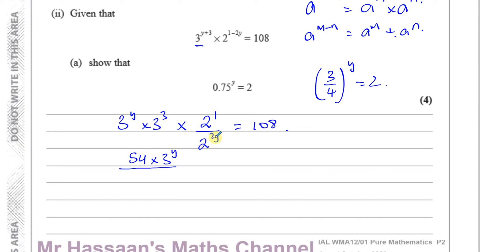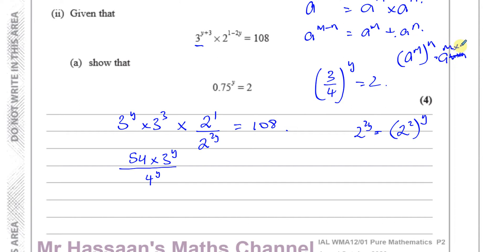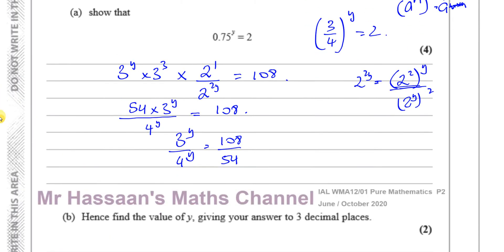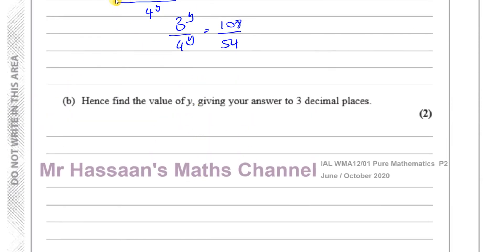Now, 2 to the power of 2y is the same as saying (2 squared) to the power of y, because when you have (a to the power of m) to the power of n, that's a to the power of m times n. So 2 to the power of 2y equals 4 to the power of y. That means I have 54 times 3 to the power of y over 4 to the power of y equals 108, which gives me 3 to the power of y over 4 to the power of y equals 108 over 54, which equals 2.